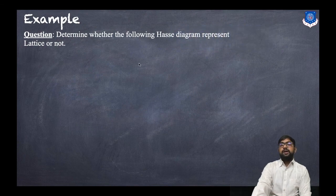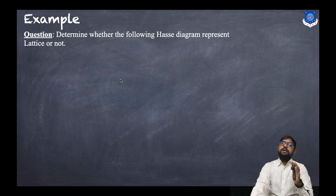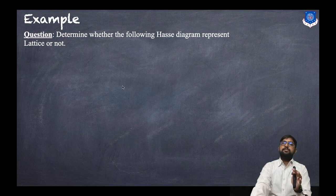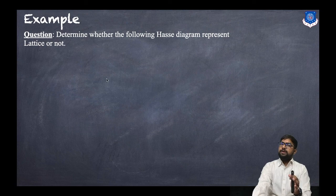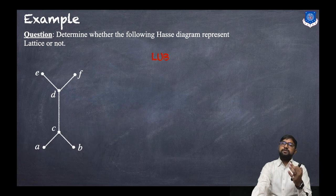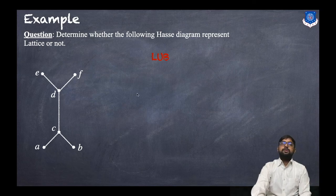The question is: determine whether the following Hasse diagram represents a lattice or not. In the previous session we already discussed two or three examples that were lattices. In this example it won't be a lattice — giving you the answer upfront: it won't be a lattice. This is the Hasse diagram, so first we'll create a LUB table as well as a GLB table.